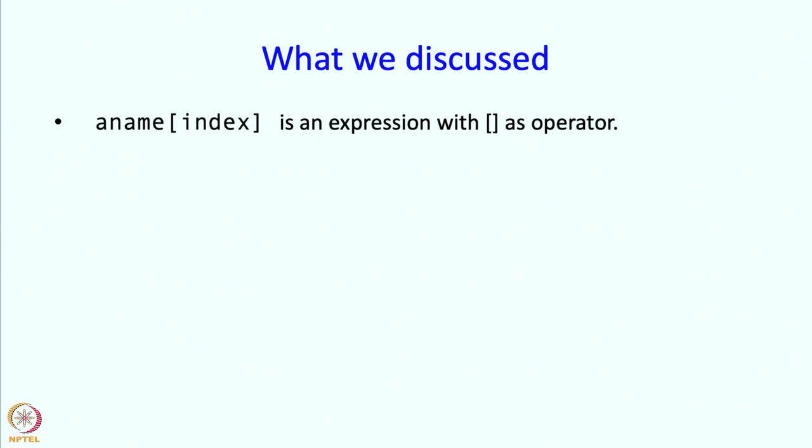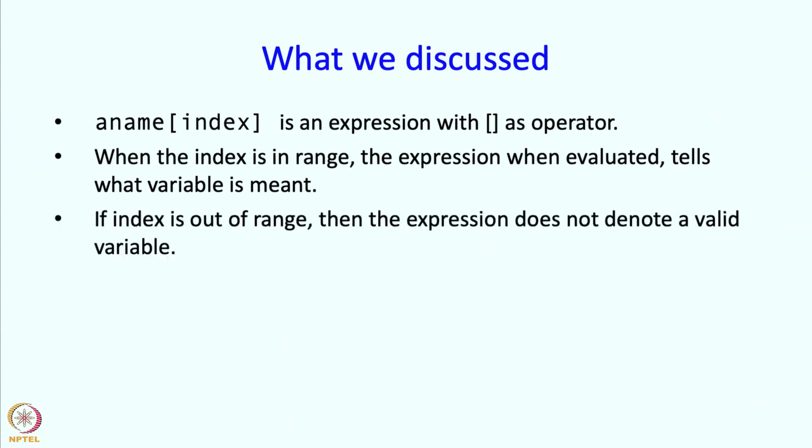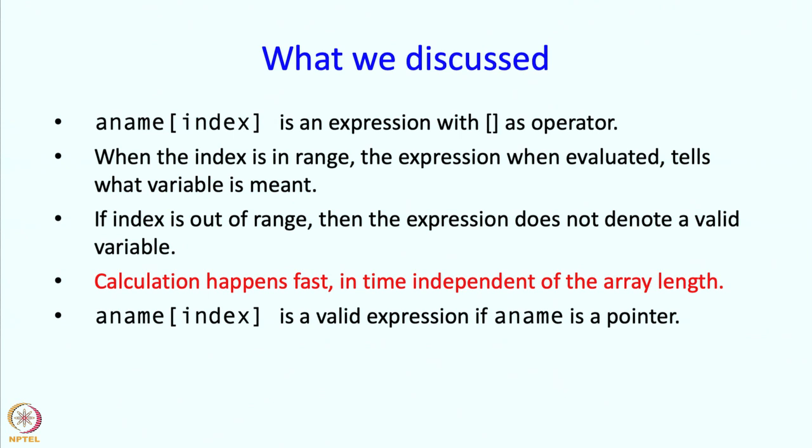Alright, so what have we discussed? We have discussed that aname of index is an expression with square bracket as an operator. When the index is in the range, the expression when evaluated tells what variable is meant. If the index is out of the range, then the expression does not denote a valid variable. And this calculation happens fast - there is only an addition and multiplication to be done and it happens in time independent of the array length. Aname of index is a valid expression if aname is a pointer. Next, all these things are going to have some bearing on how you use arrays in function calls. And that is what we will see in the next segment. We will take a break.